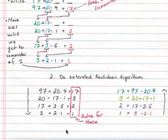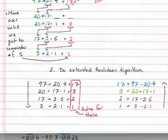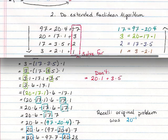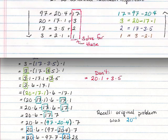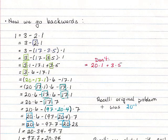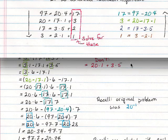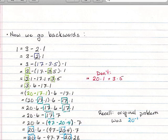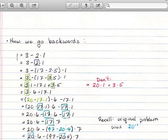So let's move this up here. I'll be coming back to that. But now we do the backward step. We want to start with the bottom one, the last one we had before, hence the backwards. The 1 equals 3 minus 2 to the 1, or 2 times 1. So I rewrote that here.